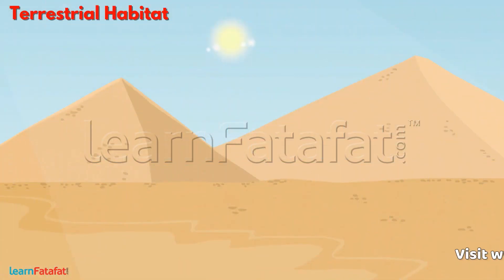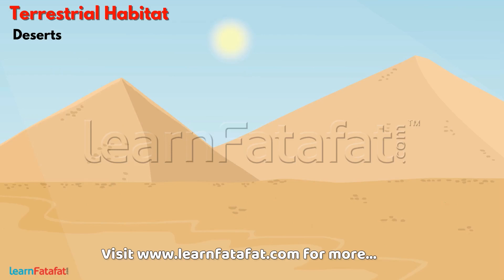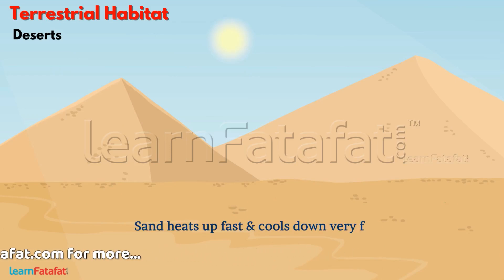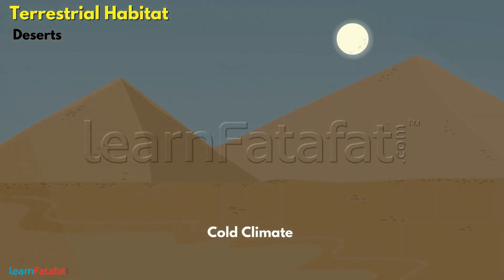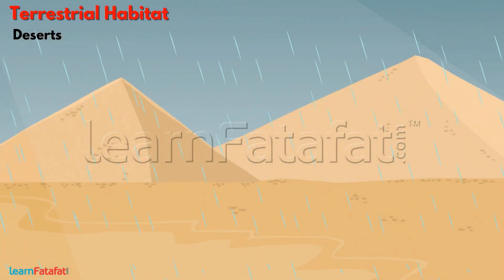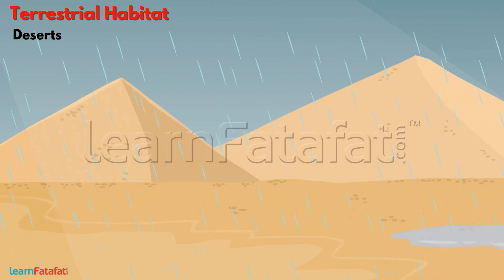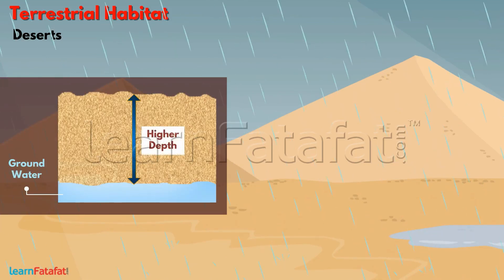Let's talk about deserts. The abiotic factors in a desert include a lot of sunlight. The sand heats up very fast and also cools down very fast, so there is very hot climate during the day and very cold climate during the night. There is very less rainfall in deserts, so water availability is very small. Even the groundwater is at a higher depth.